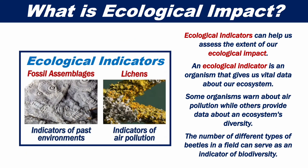Ecological indicators can help us assess the extent of our ecological impact. An ecological indicator is an organism that gives us vital data about our ecosystem. Some organisms warn about air pollution while others provide data about an ecosystem's diversity. The number of different types of beetles in a field, for example, can serve as an indicator of biodiversity.